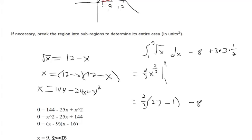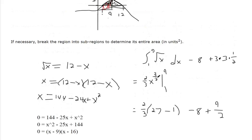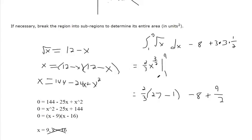Then we need to subtract 8, and then add, that's 9 halves. So I'll leave it here. The rest of this is just arithmetic, getting common denominators and everything. But that should be the area of the sub-region.